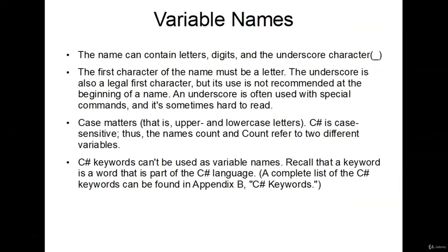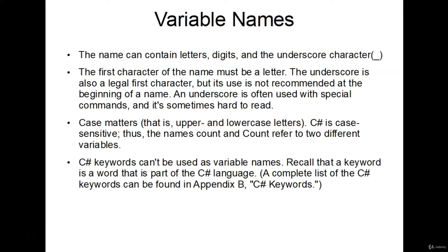After we declare our data type, the next thing to do is name your variable. A few rules for naming variables: the name can contain letters, digits, and underscore characters. The first character of the name must be a letter — we can't use numbers or special characters to start. Case matters — uppercase 'myVariable' is different from lowercase 'myVariable.' Lastly, C# keywords cannot be used as variable names. After this video there'll be a resource page with all the reserved keywords in C# — they are strictly off limits.